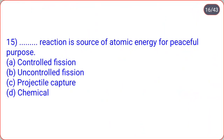The next: dot-dot reaction is the source of atomic energy for peaceful purpose. Options are controlled fission, uncontrolled fission, projectile capture, chemical. So correct option is controlled fission, option A. For peaceful purpose, controlled fission reaction is used.